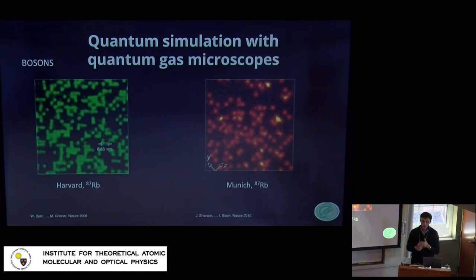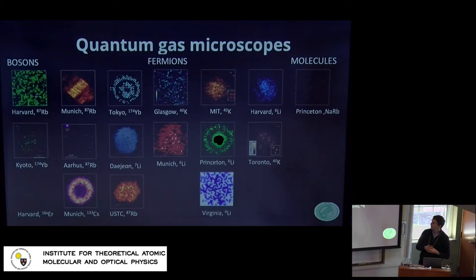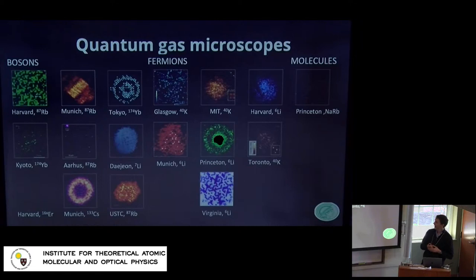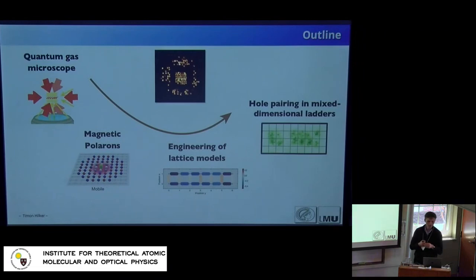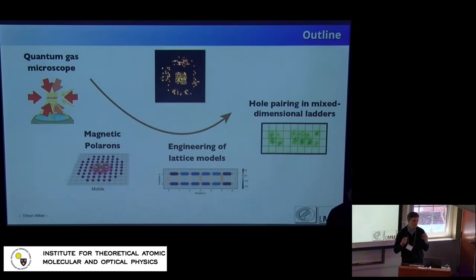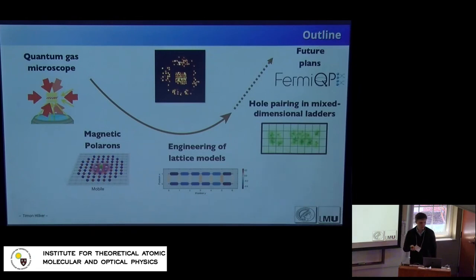We work with quantum gas microscopes, which were first introduced here at Harvard and shortly after in Munich. There's now a whole collection of these microscopes around the world. I'll focus on the experiment I've been working with in Munich with lithium-6. The outline for today: after introducing the experimental platform, I'll cover the one-hole system and the concept of magnetic polarons, then discuss engineering of lattice models for control and readout, and finally present our results on hole pairing in mixed-dimensional lattices, with a brief outlook.